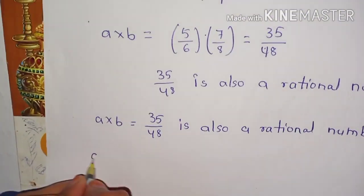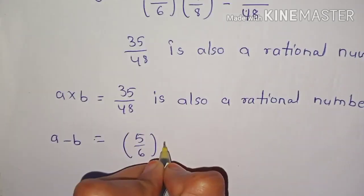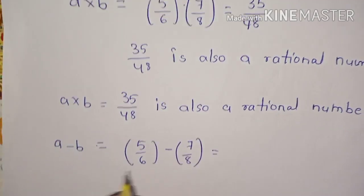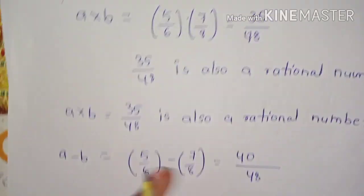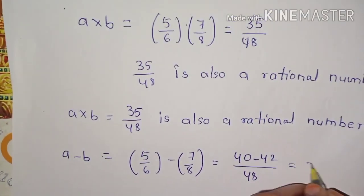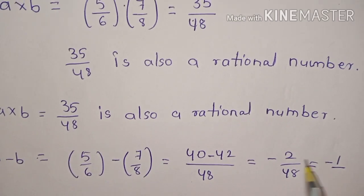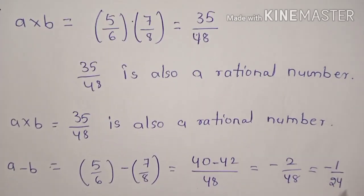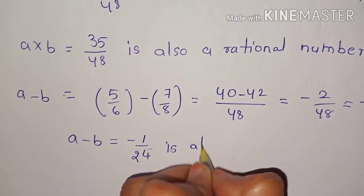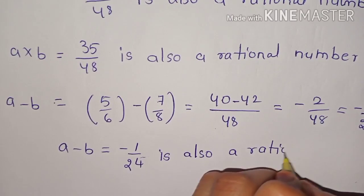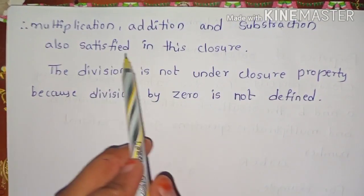Next, subtraction: A minus B. A minus B equals 5/6 minus 7/8. The LCM of 6 and 8 is 48, giving us (8×5 − 6×7) / 48 = (40 − 42) / 48 = −2/48, which simplifies to −1/24. So A minus B equals −1/24, which is also a rational number. So multiplication, addition, and subtraction are all satisfied under closure property.